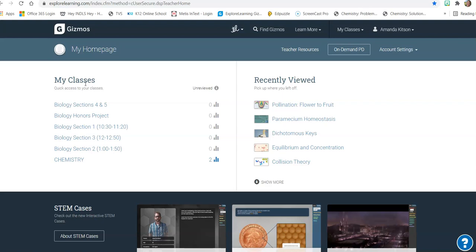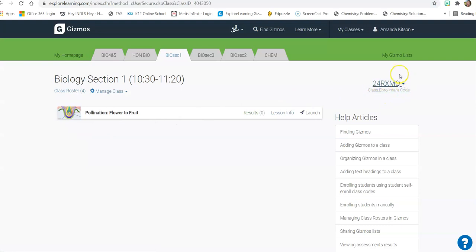So if you are in section one, your class code is 24RXMQ. If you're in section two, that is our one o'clock class, 7JHXXX is your enrollment code. And if you're in section three, your enrollment code is HLRMW3.